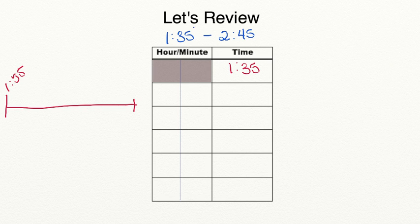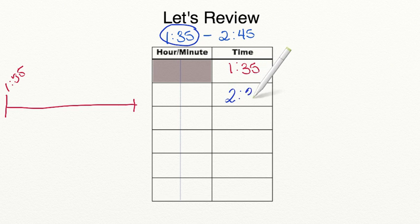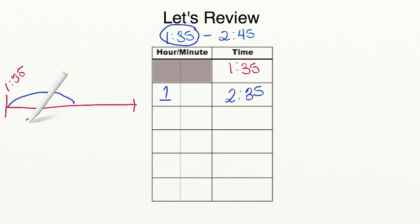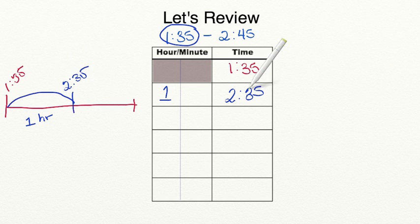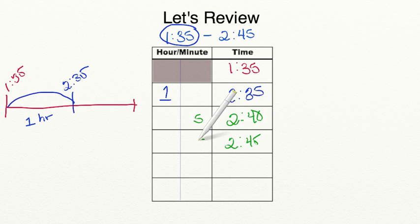Let's review what you've learned in today's lesson. You can use a number line or a T-chart to find elapsed time. We'll start with 1:35, listed first on both the T-chart and the number line. Next, find whole hours: from 1:35 to 2:35 is 1 full hour — mark it on both tools with units. If we go one more hour we'd be past our end time, so we move to five-minute intervals: 2:35 to 2:40 is 5 minutes, and 2:40 to 2:45 is another 5 minutes.